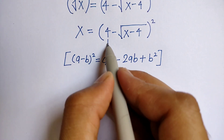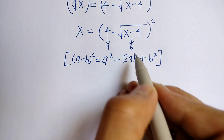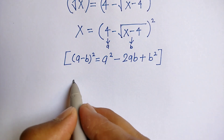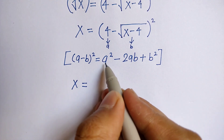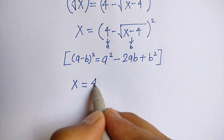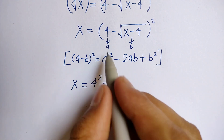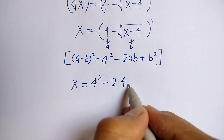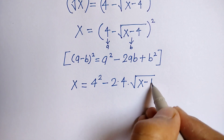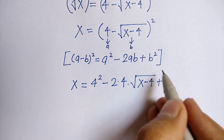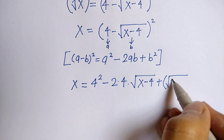Here we consider a as 4 and b as root x minus 4. By applying this identity, we get x is equal to 4 square minus 2 into 4 into root x minus 4, plus root x minus 4 whole square.